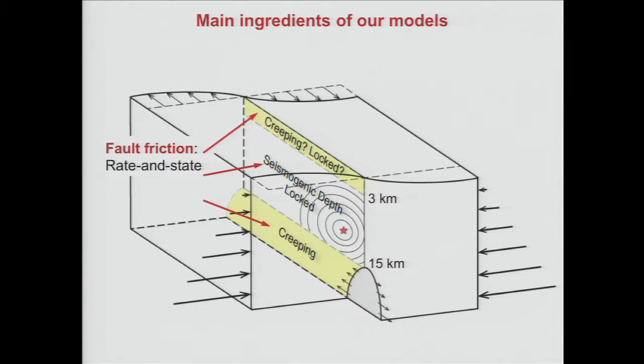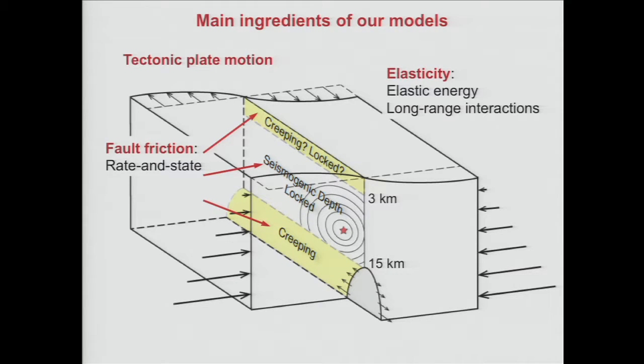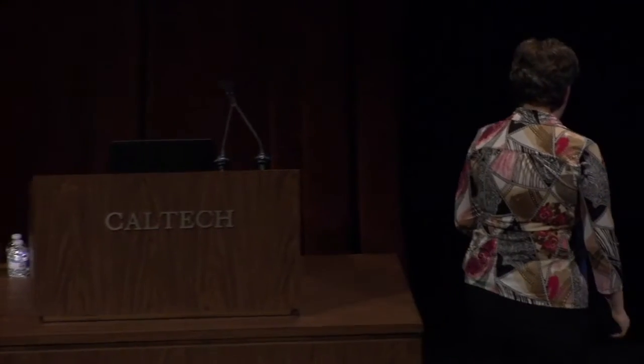So how can we now put all of this together and not just rely on the spring-slider example, but really simulate how this block of earth would behave under all these assumptions? We have tectonic plate motion, we have elasticity that stores energy and provides long-range interactions, and we have rate-and-state friction acting on the fault zone, which is variable in space and has these interesting dependencies with slip and relative motion. How do we build such earthquake source models?